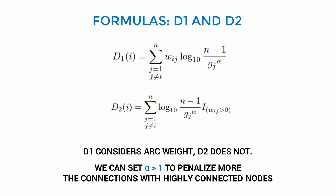we multiply the weight of its connections by the logarithm of the maximum number of possible connections a node can have, which is n-1, divided by the degree of the node connected to i.